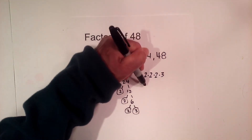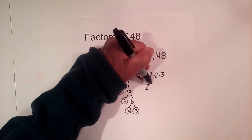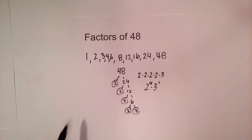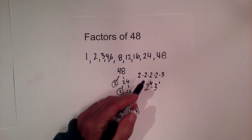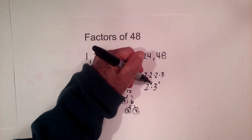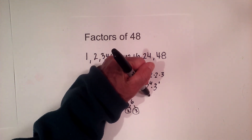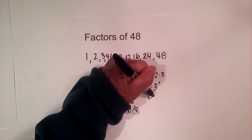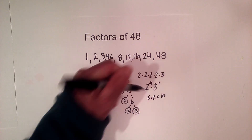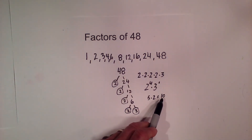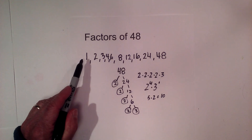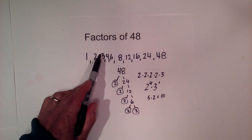So the prime factors of 48 are 2 times 2 times 2 times 2 times 3, or 2 to the 4th times 3 to the 1st. Now a trick: you can add 1 to each exponent — 4 plus 1 is 5, and 1 plus 1 is 2 — then multiply these together, and this tells you how many factors 48 should have.